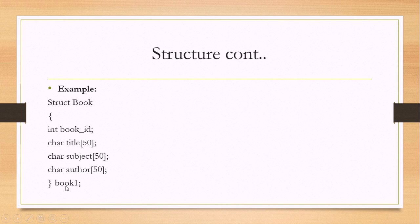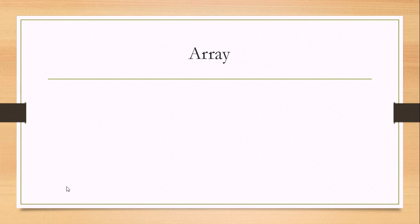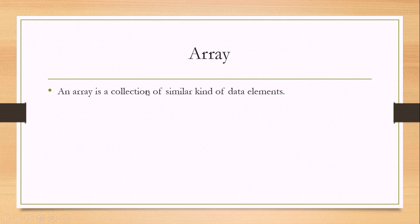For example, if you have ten books, then you have to take ten variables: book one, book two, book three, up to book ten. To ease this process, we use array of structure. As we know, array is a collection of similar kind of data elements. If we want to store more than one record of structure type, we create an array of structure.